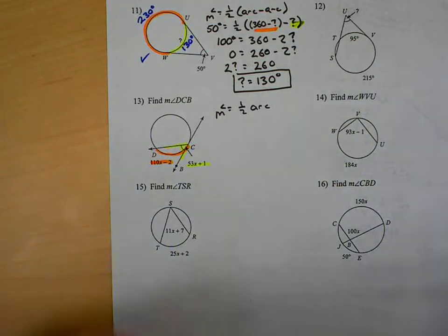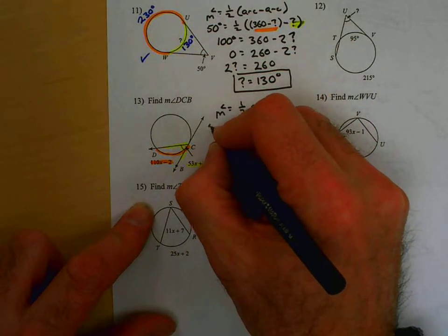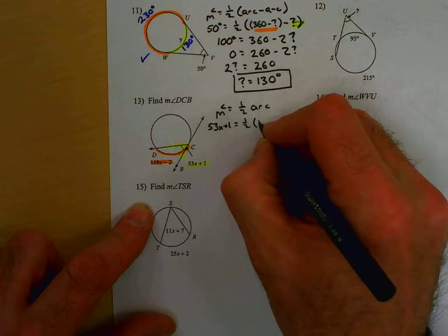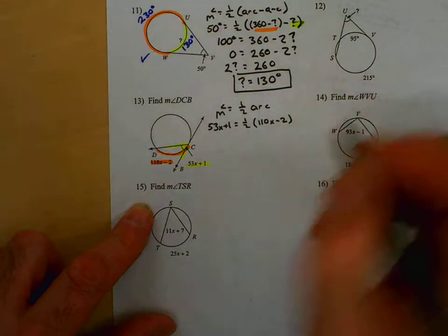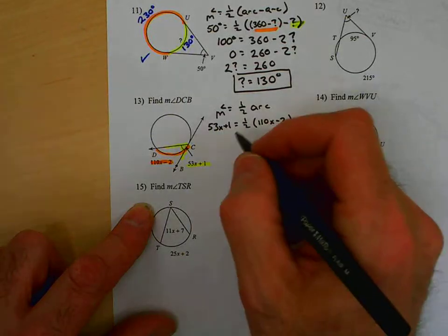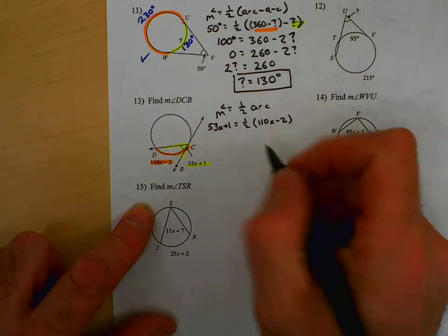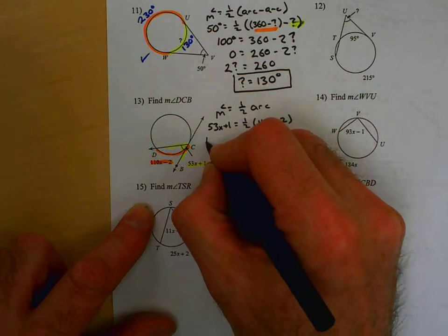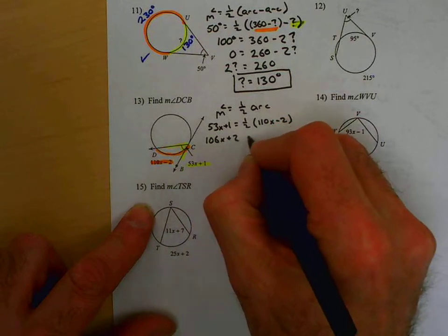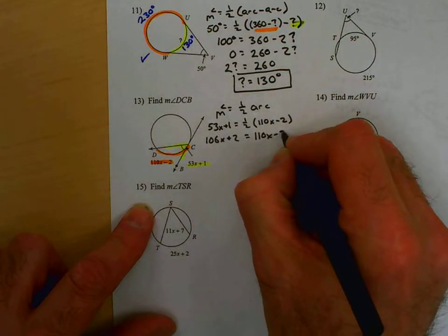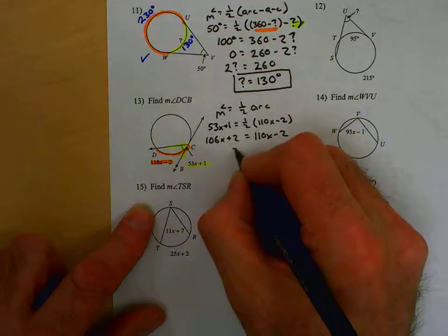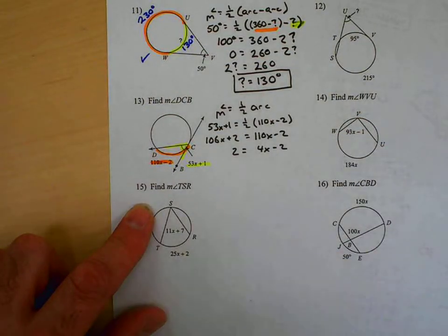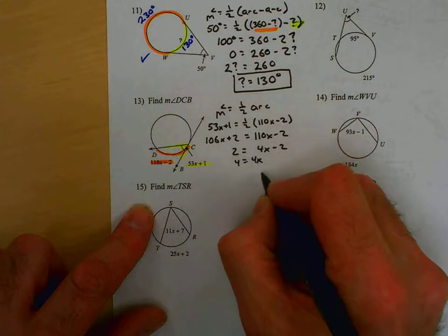So, plugging that into that equation, we get 53x plus one equals half of the arc, which is 110x minus two. Double both sides. I still like doing that. It gets rid of the fraction, which we all like doing. But if I double this, I get 106x plus two. I have 110x minus two. Subtract 106x from both sides. You get 2 equals 4x minus 2. Add 2 to both sides, and you get 4 equals 4x, so x equals one.